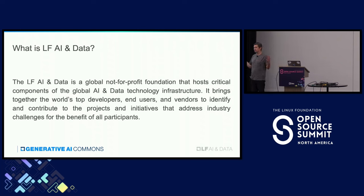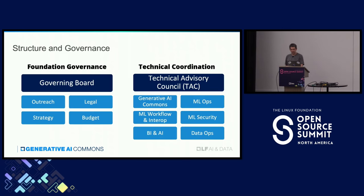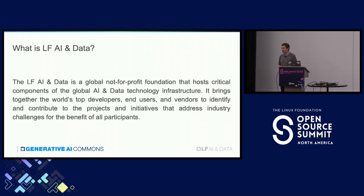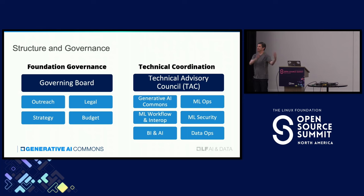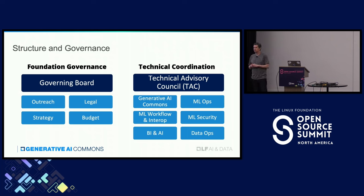We started Linux Foundation AI, like many other umbrella organizations, to bring open source AI under one organization. As I mentioned, we started it six years ago and we are growing pretty nicely. I'll show you some numbers soon. This is how we are structured — we have all the projects and the governing board on one side, and then the Technical Advisory Council with all the different activities. I will focus today on the Generative AI Commons.